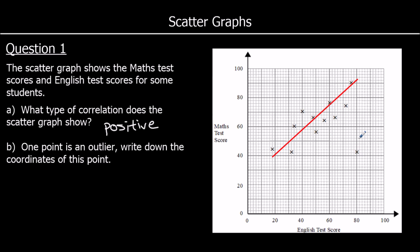It says one of the points is an outlier — write down the coordinates of the point. We can see there's one point that doesn't fit with our correlation and is not close to the line of best fit. Its coordinates are 80 and 42.